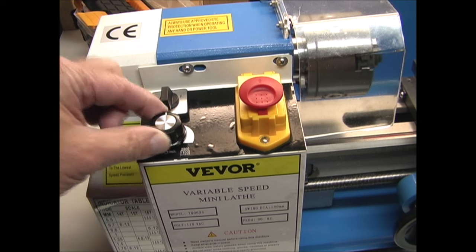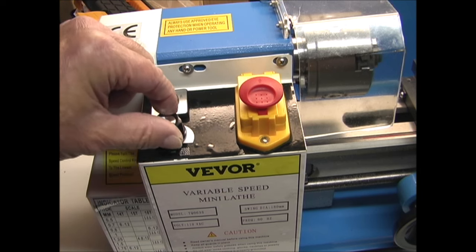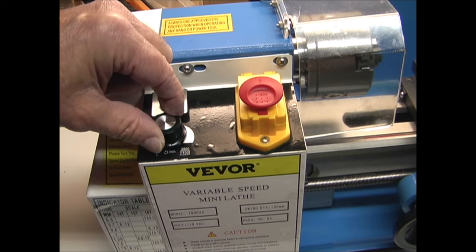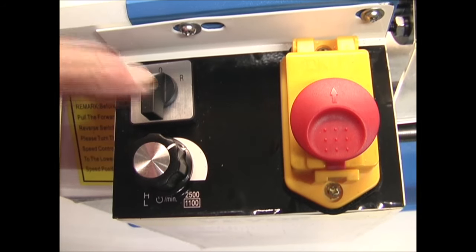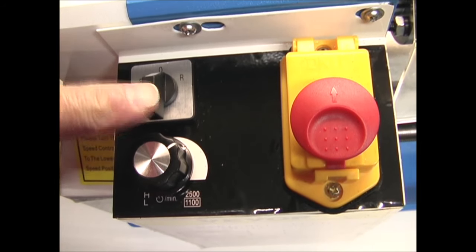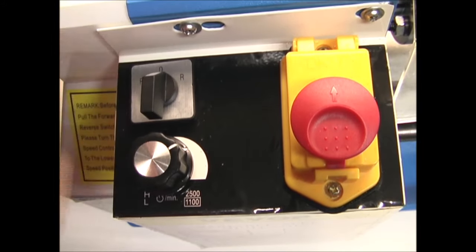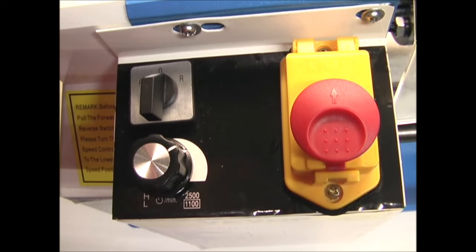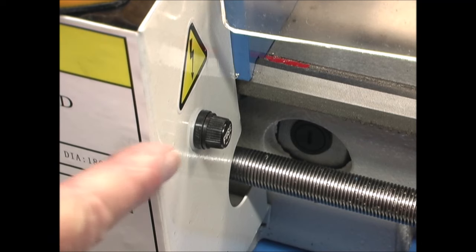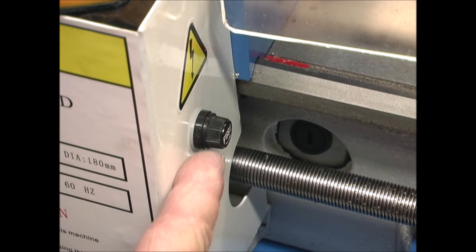Over here is the speed control knob for the RPM, and here's the forward reverse switch: forward, reverse, and off. On the side of the control panel there's a fuse and in the toolbox was a spare fuse.